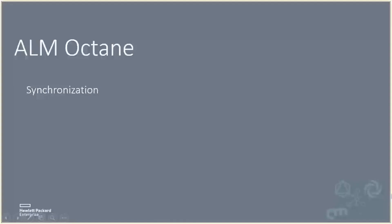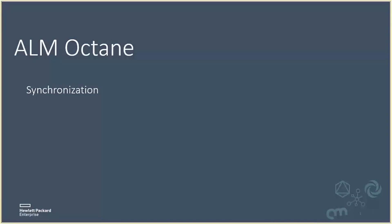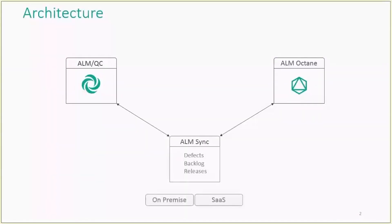This concludes the live demo of synchronizing ALM QC.NET with ALM Octane. In this demo we showed you how to synchronize and configure endpoints for defects, requirement backlog, and releases in a bidirectional way between the two endpoints. I hope you enjoyed the session. Thank you.